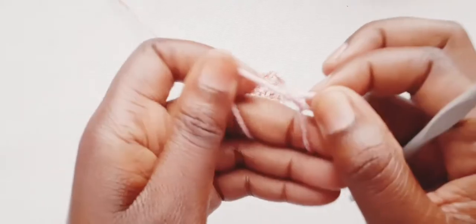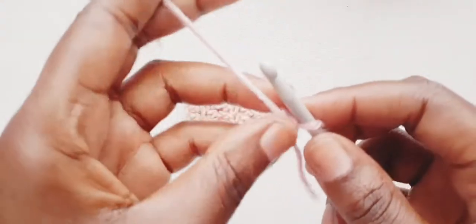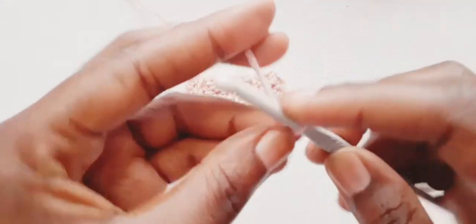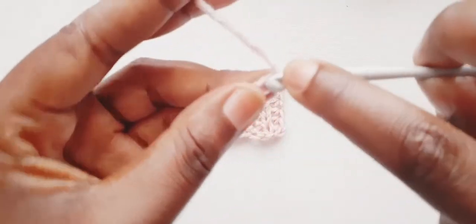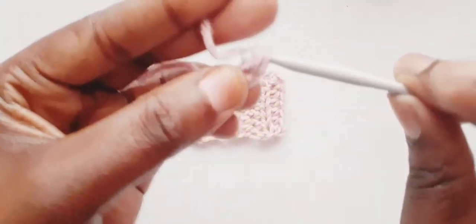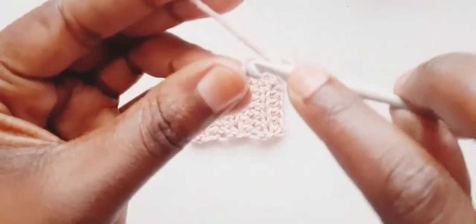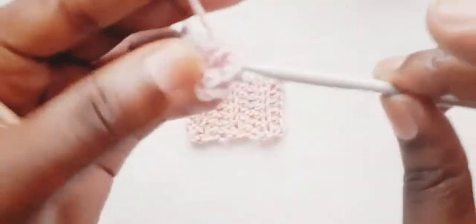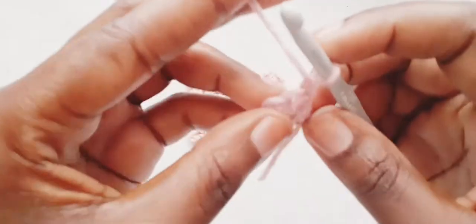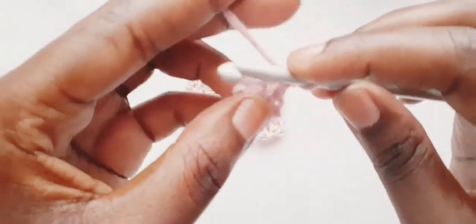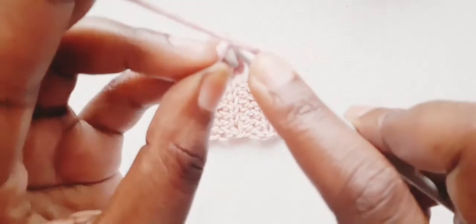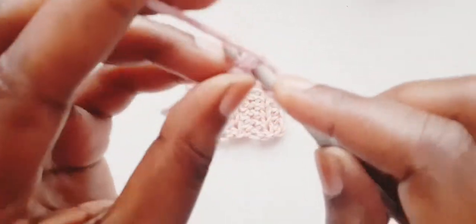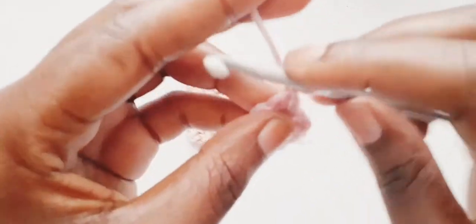So to make the middle part we start with a slip knot. Then we chain two: one, two. We block off the last one and make an extra chain. Then we make two half double crochets for row one. One, two. We chain one and turn our work. Then we make another two half double crochets for row two.